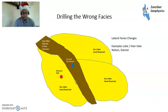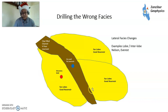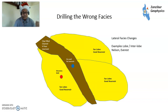The geologist who had worked on Everest, Mark Goodchild, then went to work for a company called Enterprise, who picked up the Nelson licence also in the North Sea. He used this experience to discover the Nelson Field, which is the field that made Enterprise Oil a very successful company. So again — the lesson is about drilling in the wrong facies initially.